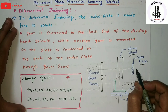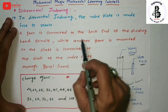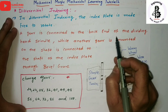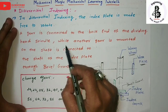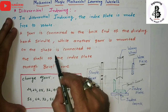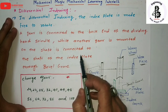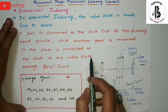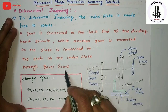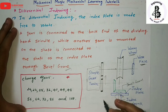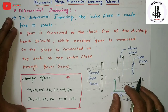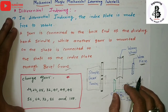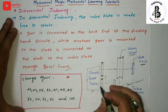The motion is converted by the simple gear train and transferred to the work piece. Regarding the theory of a differential indexing mechanism: a gear is connected to the back end of the dividing head spindle, while another gear mounted on a shaft is connected to the shaft of the index plate through bevel gears.